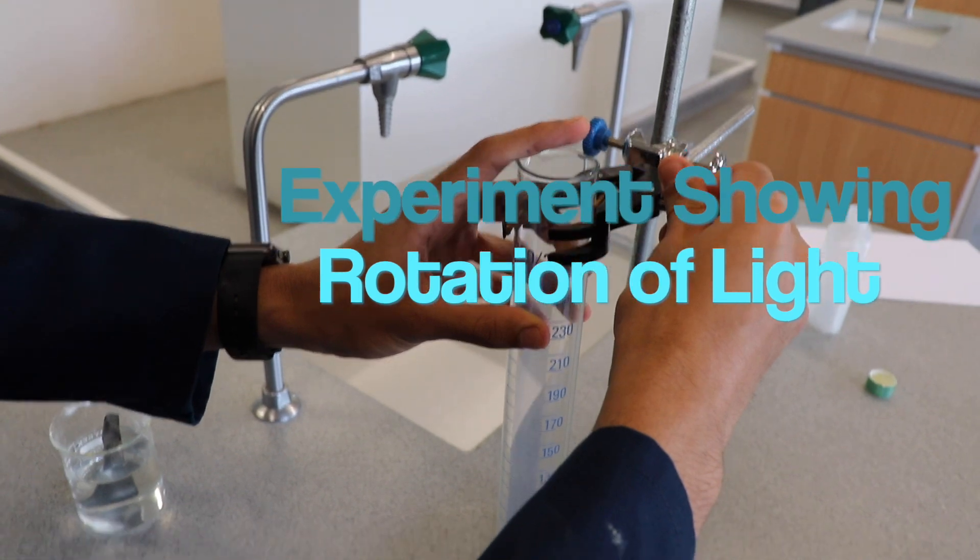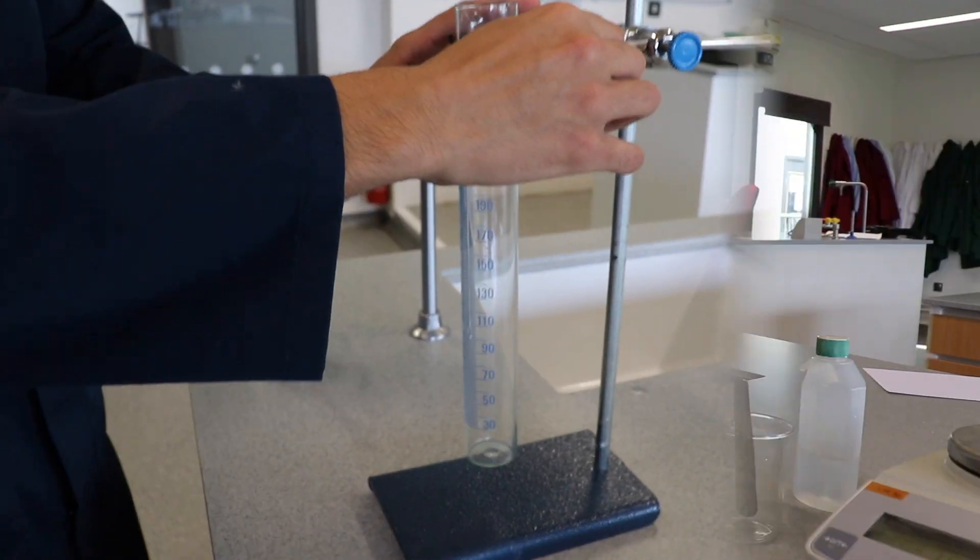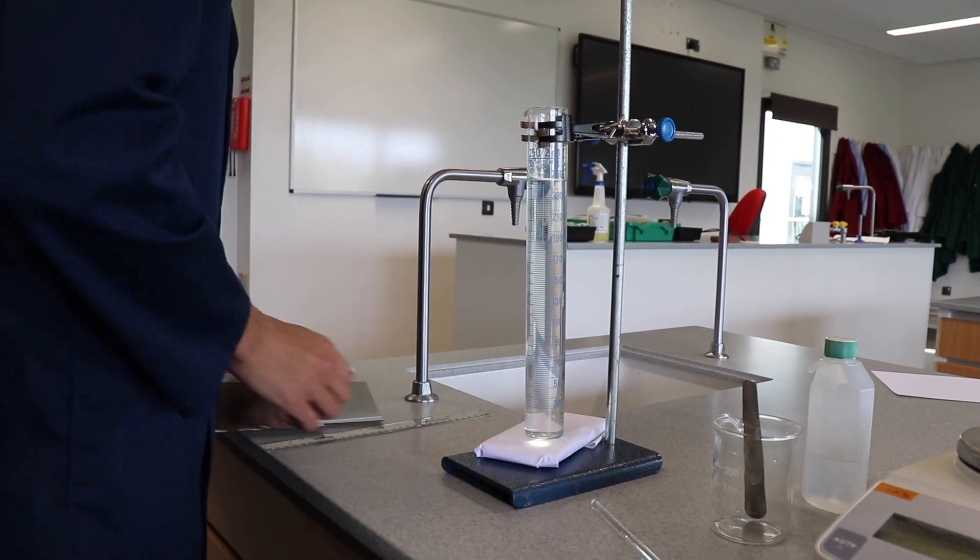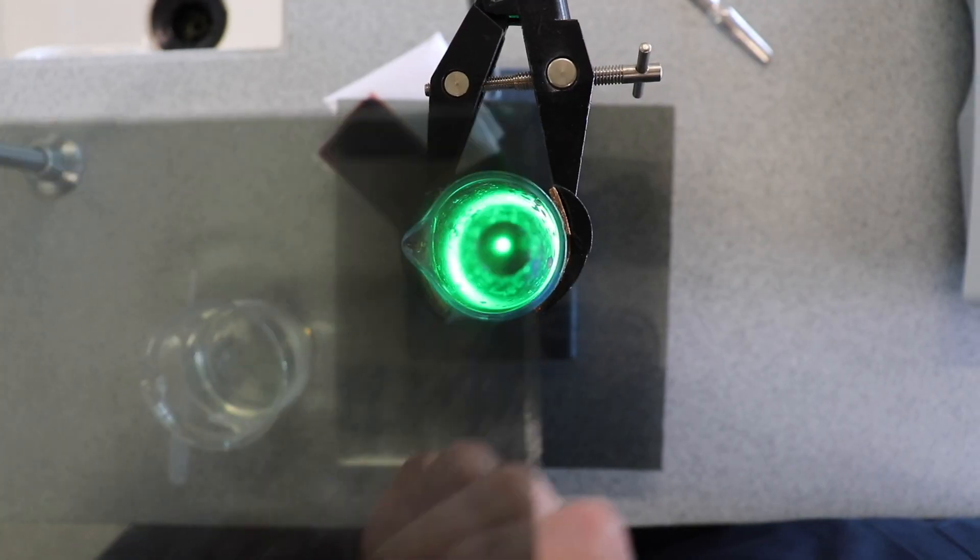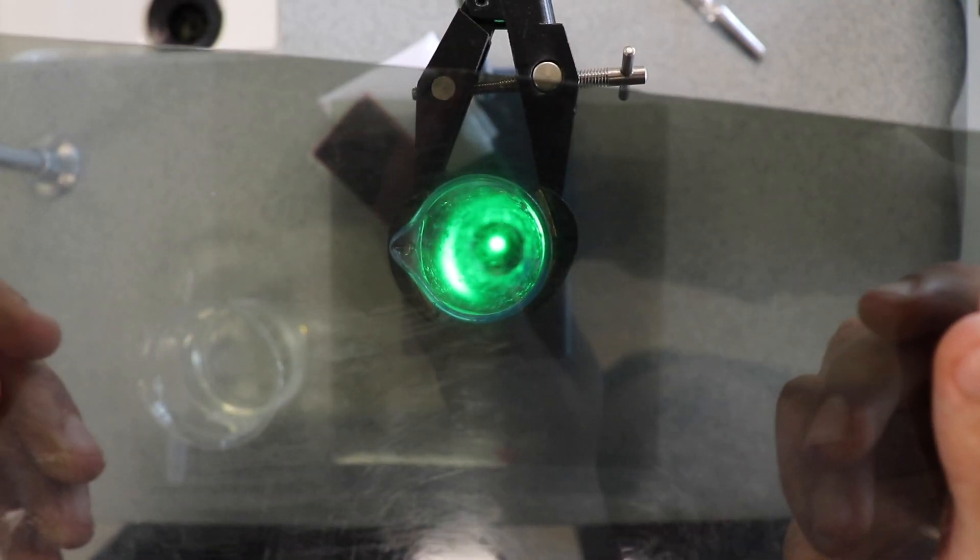We set up a tall graduated cylinder on a clamp stand, placing a torch, green filter, and polarizing filter underneath. When a second polarizing filter is held above the empty cylinder, we can see how polarized light behaves.